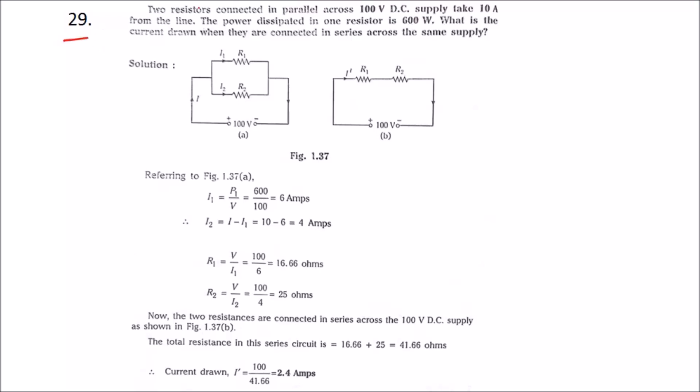Problem number 29: Two resistors connected in parallel across 100 volt DC supply take 10 amps from the line. The power dissipated in one resistor is 600 watts. What is the current drawn when they are connected in series across the same supply?